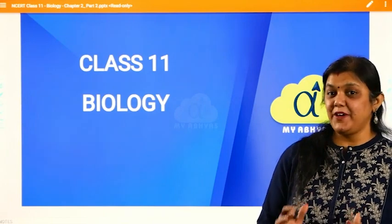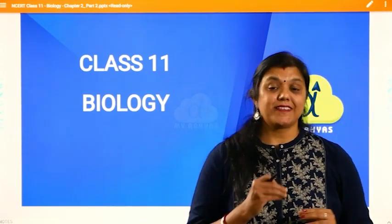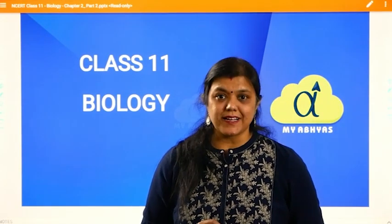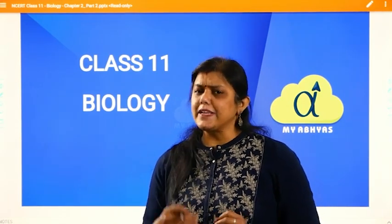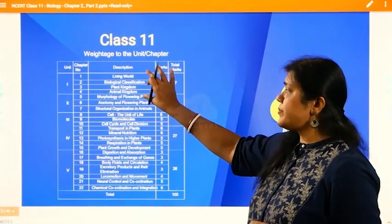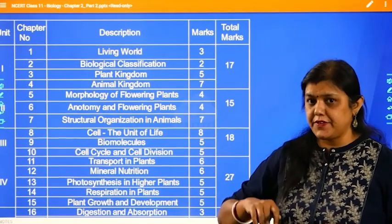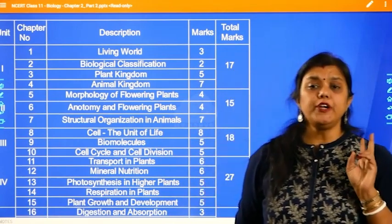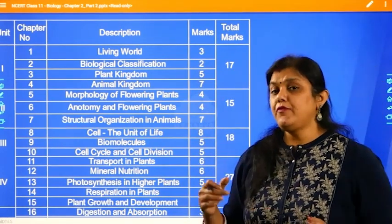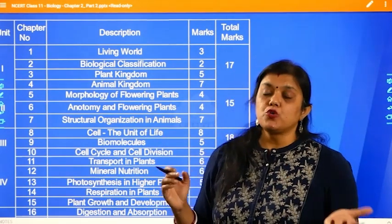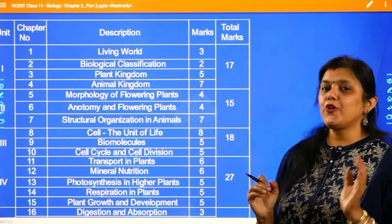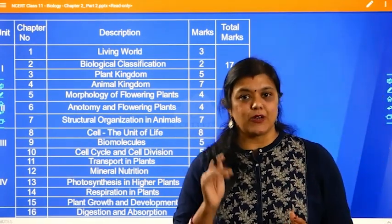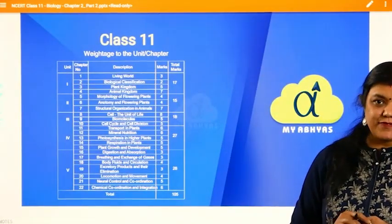Hello students, welcome to my Abhyas. Here we are with the second chapter of first year, that is 11th standard - biological classification. We had one more set of videos where we discussed the introduction and kingdom Monera. I hope you have gone through those videos. Let us quickly revise one more time. As per your board exams, only two marks may come from this chapter, and for competitive exams, two to three questions carrying four to eight marks. We are going to get all the marks of the board.